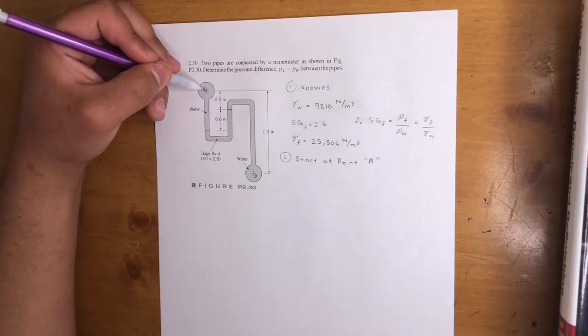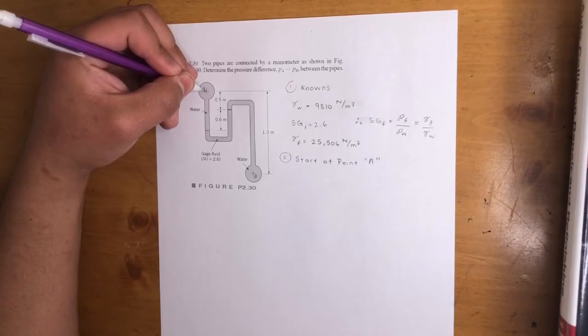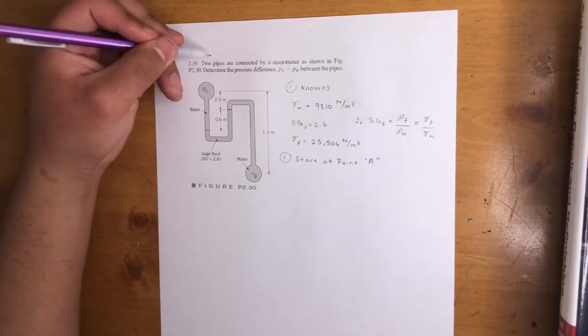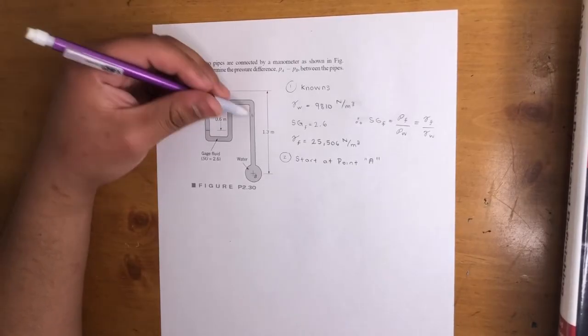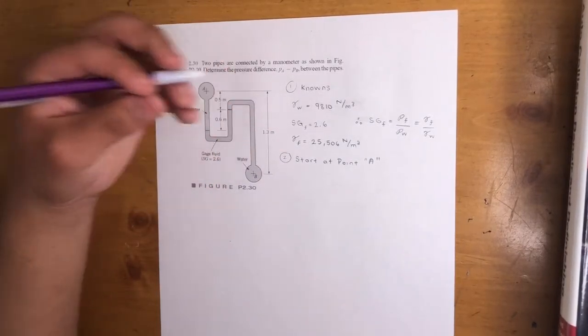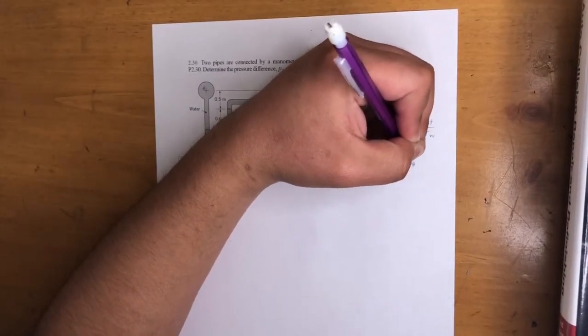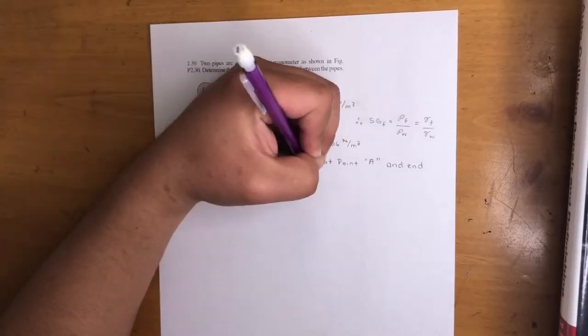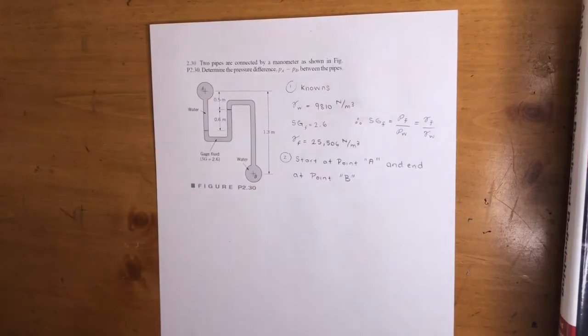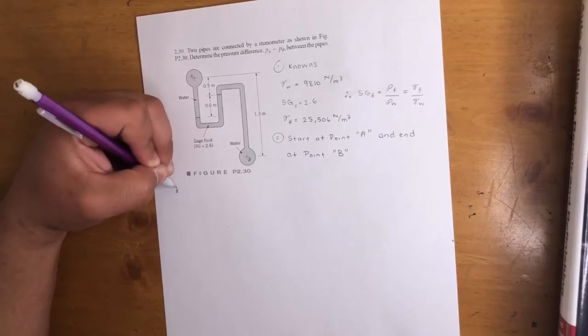We're starting at point A. So we're going to start here and work our way to point B. Anytime you go down, that's a positive. Anytime you go up, that's a negative. In this case we're going to come back down, so it's going to be a positive again. And we're going to set that equal to our destination, which is point B.